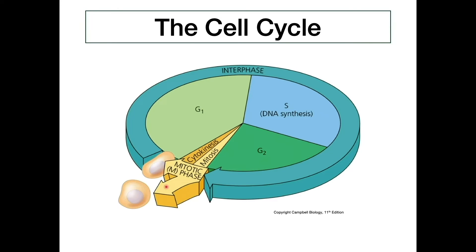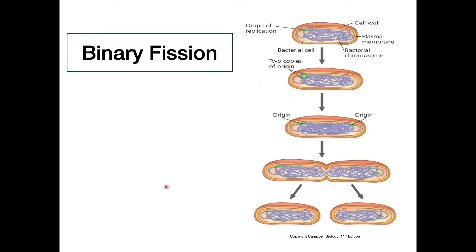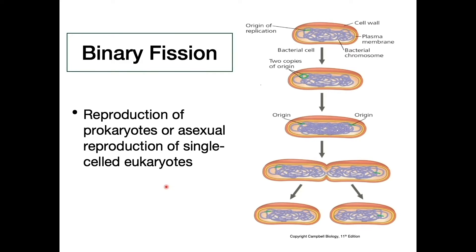Moving on to binary fission — this is a special kind of cell division involving the reproduction of prokaryotes or the asexual reproduction of single-celled eukaryotes. Because it is asexual, binary fission results in daughter cells that are genetically identical to the original parent cell.